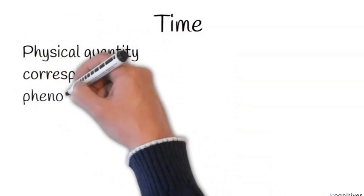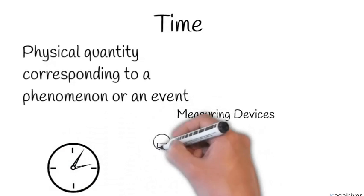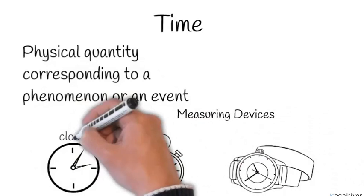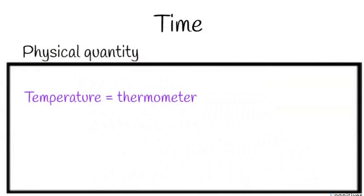The next one we're going to talk about is the measure of time. Time is a physical quantity corresponding to phenomena or events, and it is measured with devices such as watches and stop clocks. If you've done a pendulum experiment or gone for an occasion, you take measurements of events with time. So just know that for temperature, we use the thermometer, and for measurement of time, we use watches.